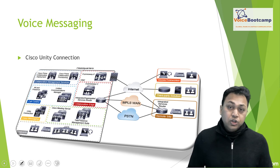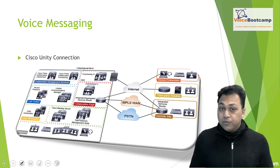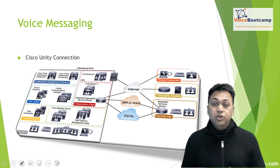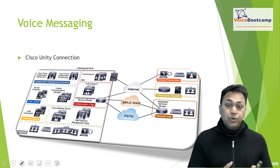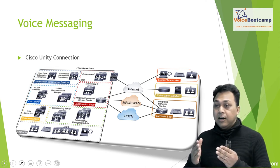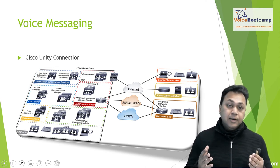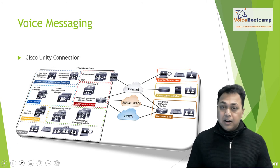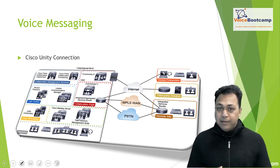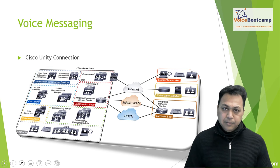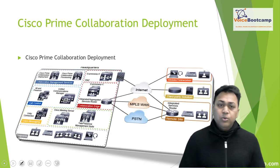Unity Connection can not only be used for voicemail services, but it can also be used for things like auto attendant, network announcements, and an IVR-based platform — limited but very easy to configure.